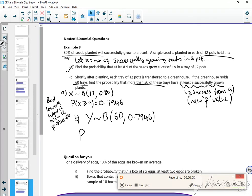I want the probability that Y is greater than or equal to 50. So it's a BCD again. My lower is 50, upper 60, number of trials 60, and my probability is 0.7946 if you can read that. I'm just going to pause it while I do it.